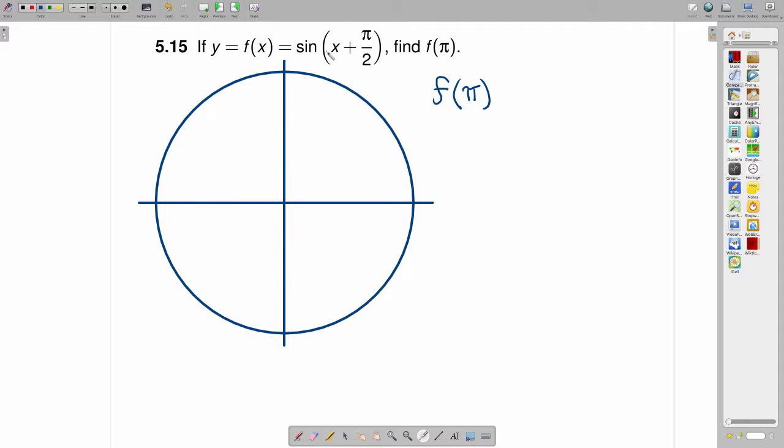all we do is wherever we see an x, we put in a pi. So this will be the sine of pi plus pi over 2.